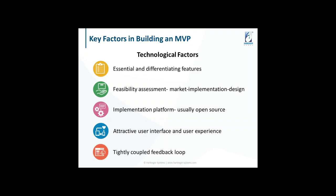And then the tightly coupled feedback loop. The whole idea behind MVP is hearing back from users about how they feel about it. Once you decide the feedback parameters in the business factors, you should also look at the mechanism of how the user is going to provide feedback. It can be surveys, questions, or five-star widgets. You can ask for a comment if the rating is three stars and above, or even for one star — all these things have to be in the MVP.